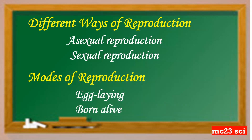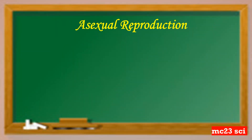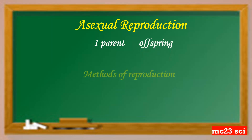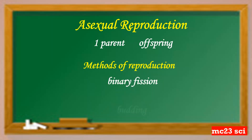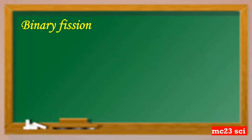The modes of reproduction are egg-laying and born alive. Asexual reproduction only needs one parent to produce an offspring. The methods of asexual reproduction are binary fission and budding.